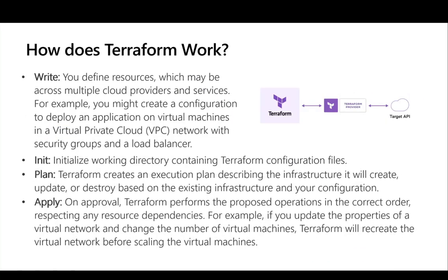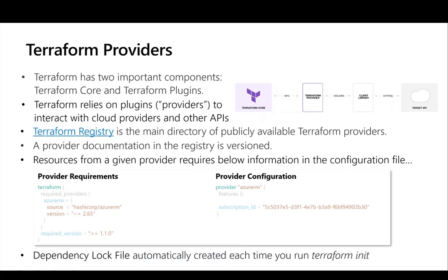At a high level, Terraform has four phases. First, you write the code to provision different resources. Then you initialize the working directory containing all your Terraform configuration files. Then you do the plan — you can think of Terraform plan as a dry run to validate your configuration files and identify which resources are new, which require updates, and which will be deleted or destroyed. Finally, you apply the plan, which executes all the configuration files to carry out your provisioning.